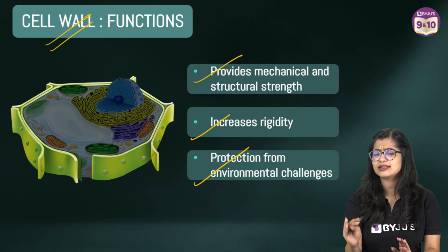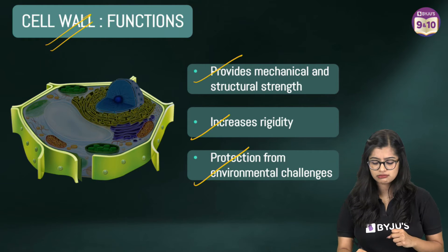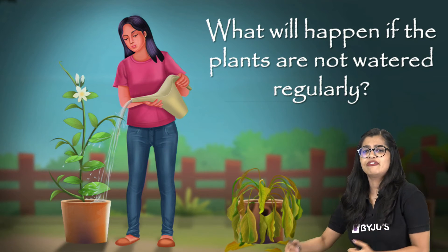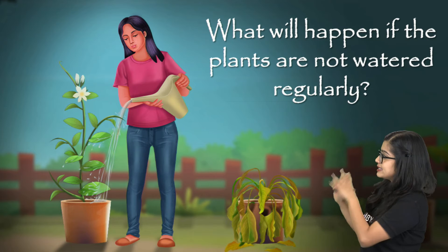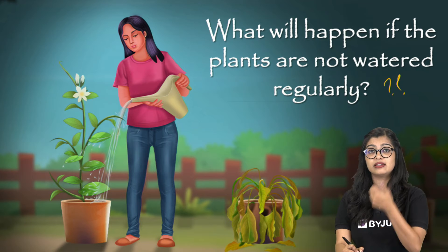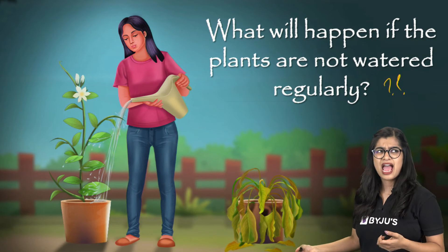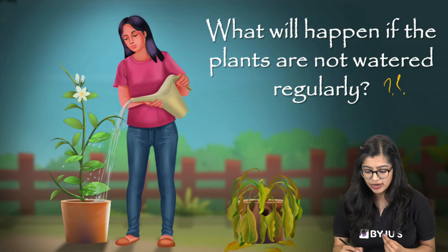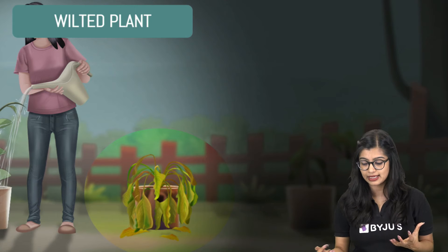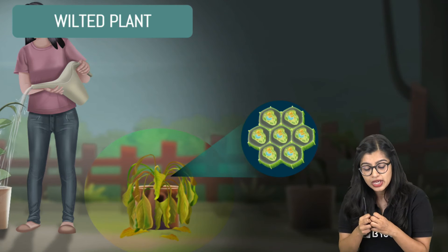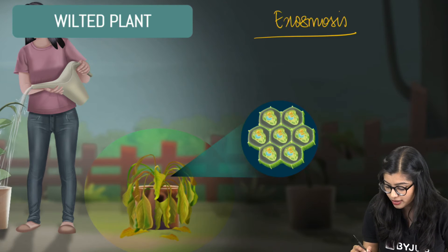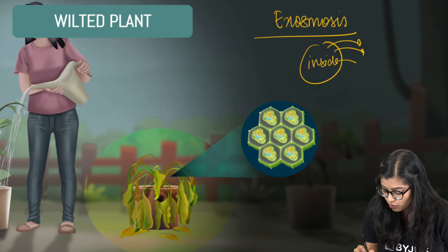I would like to make an observation here. Have you noticed that if a plant goes without water for a long period of time, the plants become droopy and they get wilted? What exactly happens when you don't regularly water plants? Why do they wilt? Does the cell wall have anything to do with this? What really happens is that when there's not enough water available or if water moves out of plant cells, the cellular content will shrink. By the process of exosmosis, water moves from inside the cell to the outside.